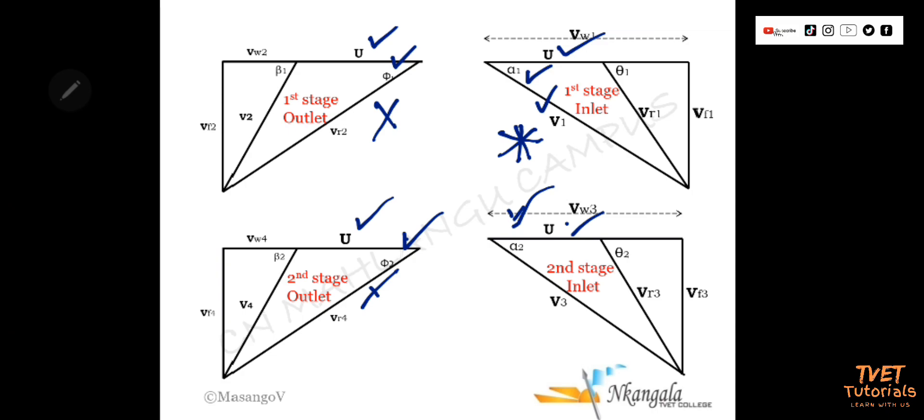You start with u. Measure the size of u. Use a protractor to measure angle alpha, and then use a ruler to draw the exact size of V1. Then you join in order to find Vr1. Then you use a protractor to measure theta 1, and ruler to measure Vf1 and also Vw1.